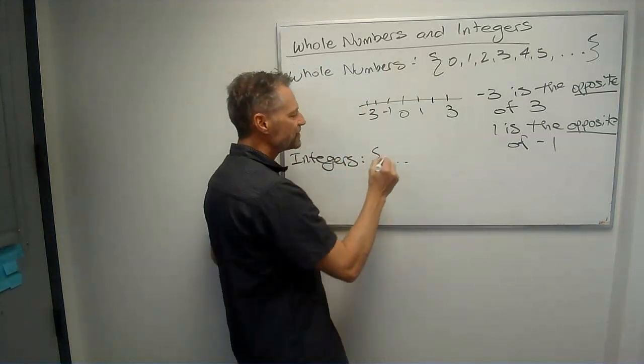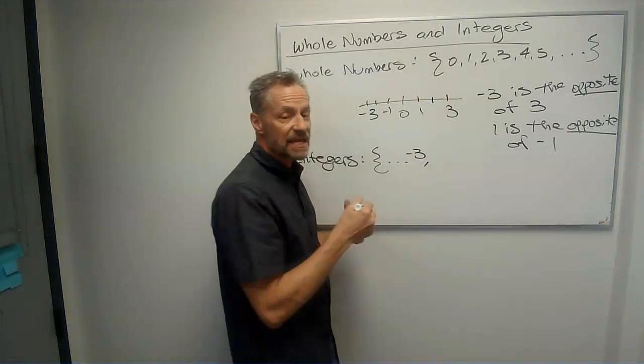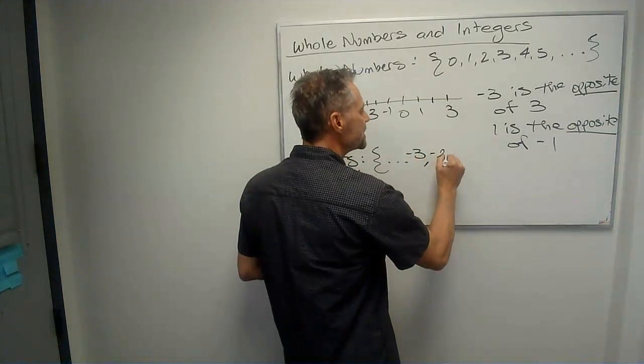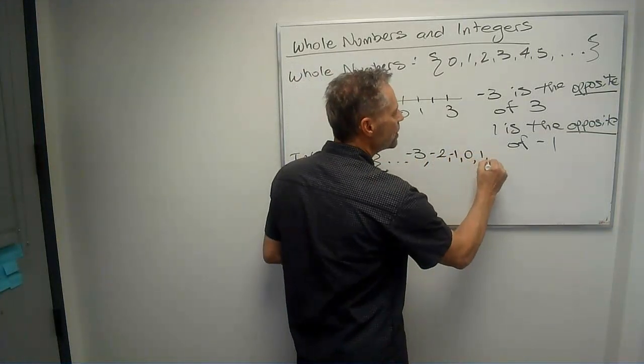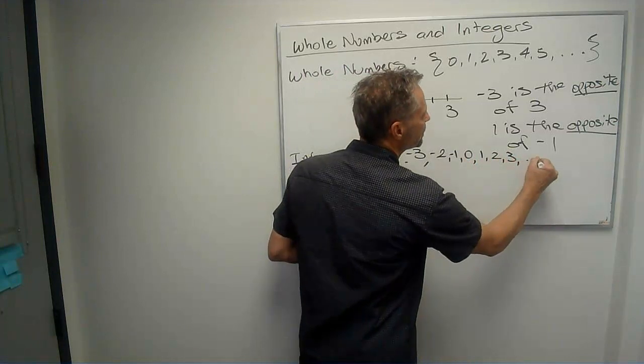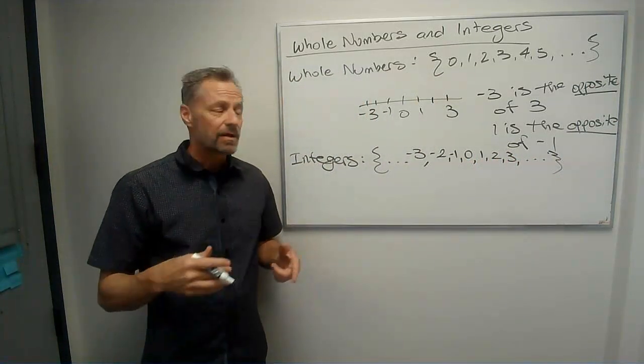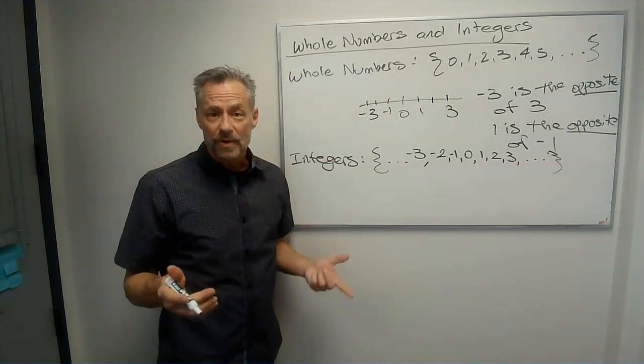Say this pattern goes forever to the left. Then we'll start with, say, negative 3, and negative 3, negative 2, negative 1, 0, 1, 2, 3, dot, dot, dot. The pattern goes on to the right as well. So the pattern goes on in both directions.